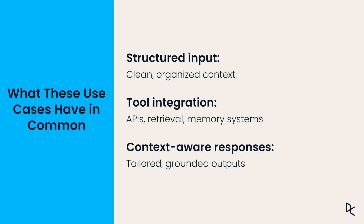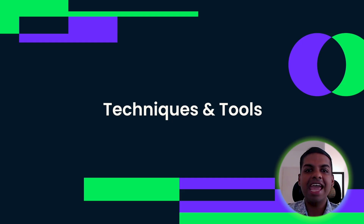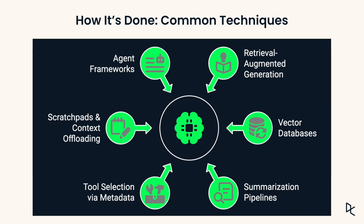So how is it done? Here are the core techniques: retrieval augmented generation, vector databases, summarization pipelines, tool selection with metadata, scratch pads and context offloading, and agent frameworks. Think of these as your toolbox — you will need to use them when engineering your context.